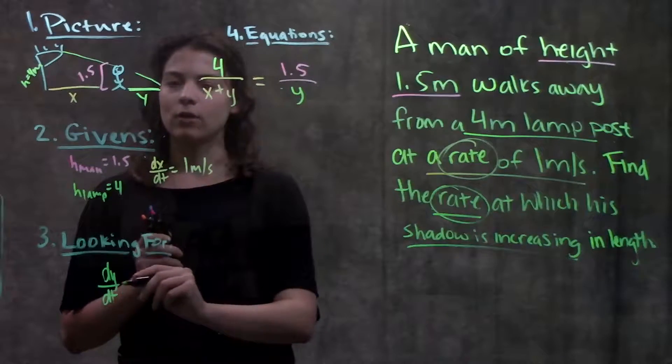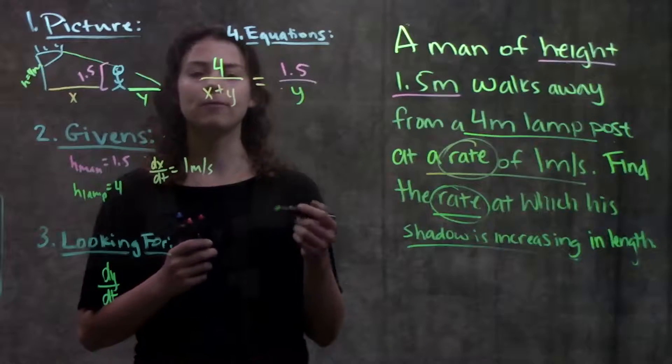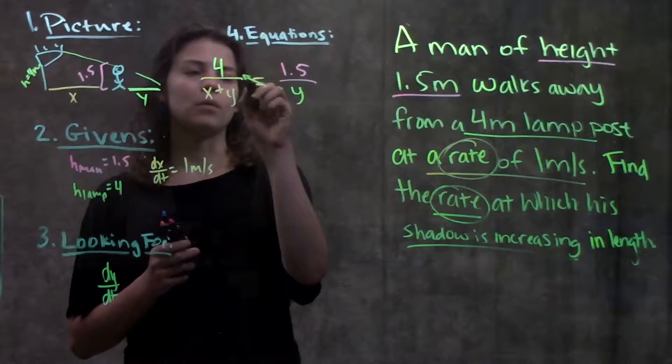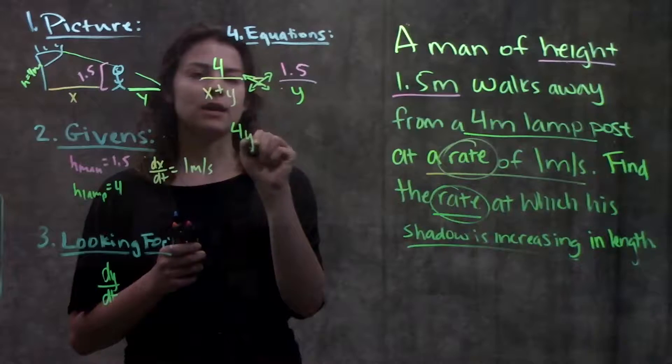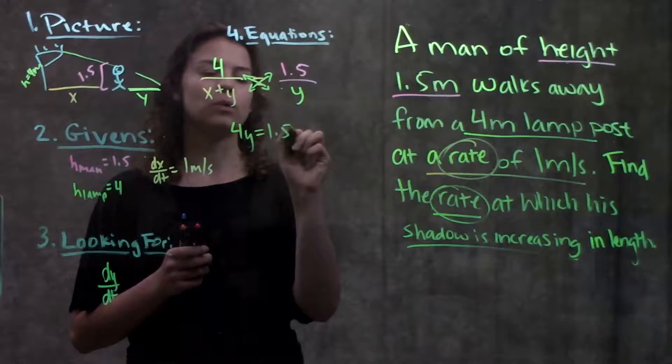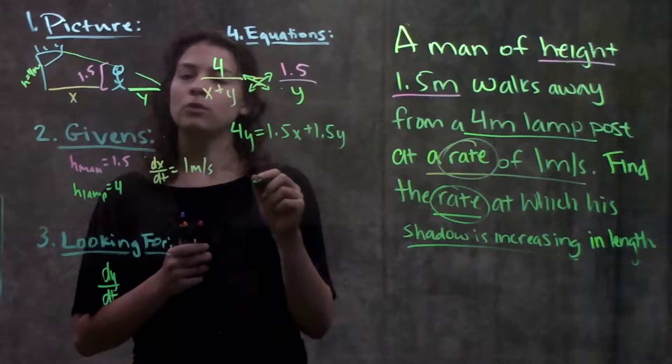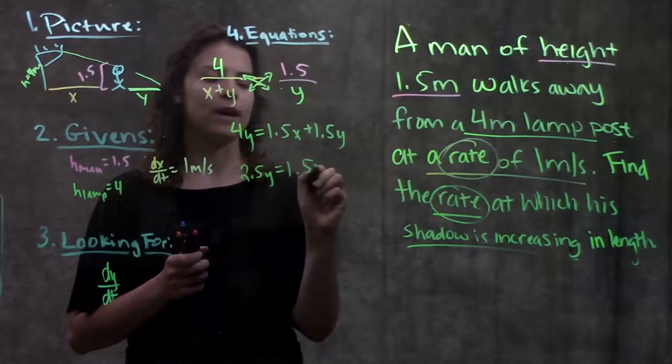Alright so remember what I'm looking for is dy over dt. I know eventually I'll have to take the derivative but before I get there let's go ahead simplify this out a little bit. So remember whenever you have proportions like this you can just cross multiply and when you do that you get 4y is equal to 1.5x plus 1.5y. Then just moving your y's on one side you get 2.5y equals 1.5x.